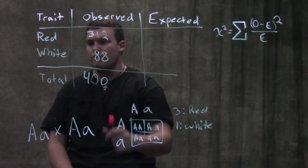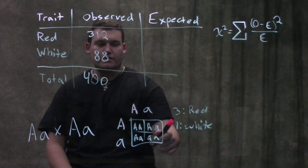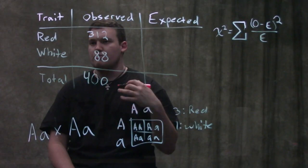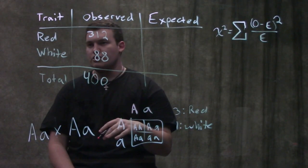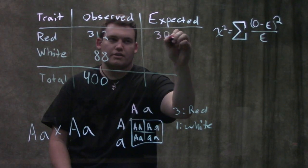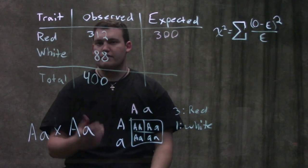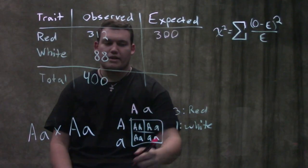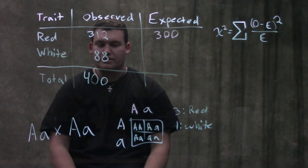So we're gonna look at our total of 400 and I decided to make it easy on myself with the math. So if three-fourths are supposed to be red and we had 400 total progeny, we would expect 300 red plants. And then we're gonna do the same thing with the white.